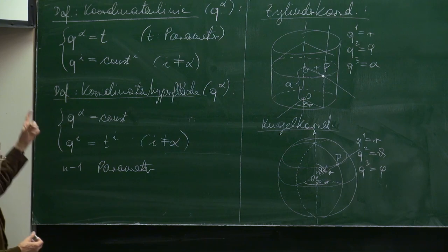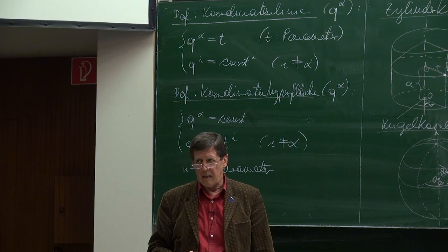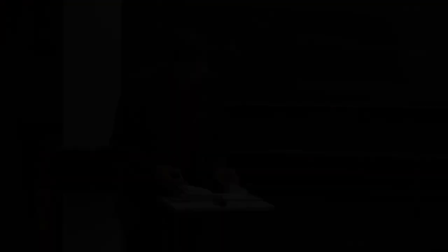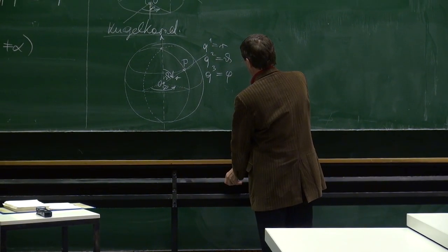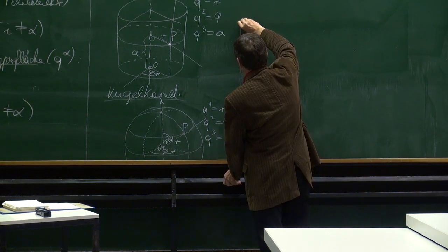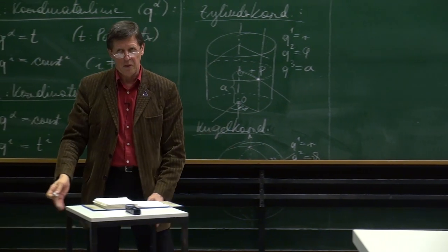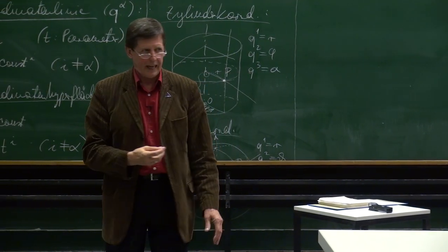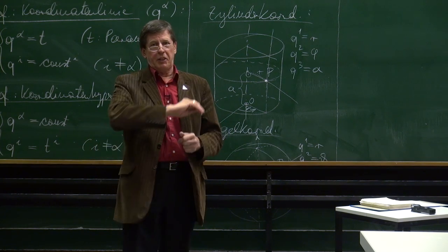So sollten Sie sich jetzt gut vorstellen können, was ich mit Koordinatenlinien und Koordinatenhyperflächen meine. Warum tun wir uns das an? Weil wir damit jetzt zu einem zentralen Punkt kommen, der uns wieder komplett in die Tensorrechnung zurückführt. Denn tensorrechnungsartig schaut das ja noch nicht aus, wenn Sie es mit dem ersten Semester vergleichen, wo es an die vielen Indizes geht, wo Co- und Kontravariant ist. Jetzt steigen wir ein.